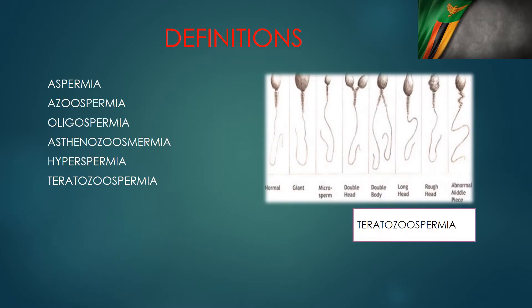We start with definitions. Aspermia is a complete lack of semen at the point of ejaculation. Azoospermia, on the other hand, is a lack of spermatozoa in the semen. Oligospermia is a reduced number — a low number — of spermatozoa in the semen.